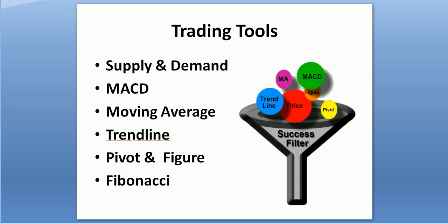We can then combine with moving average, pivot point, and trend line to confirm if we have the confluence of events. Fibonacci is the tool we use to help set up the first entry and where the stop and target are. Combined with those tools, you're going to have a very clear trading plan that can help you execute the trade.